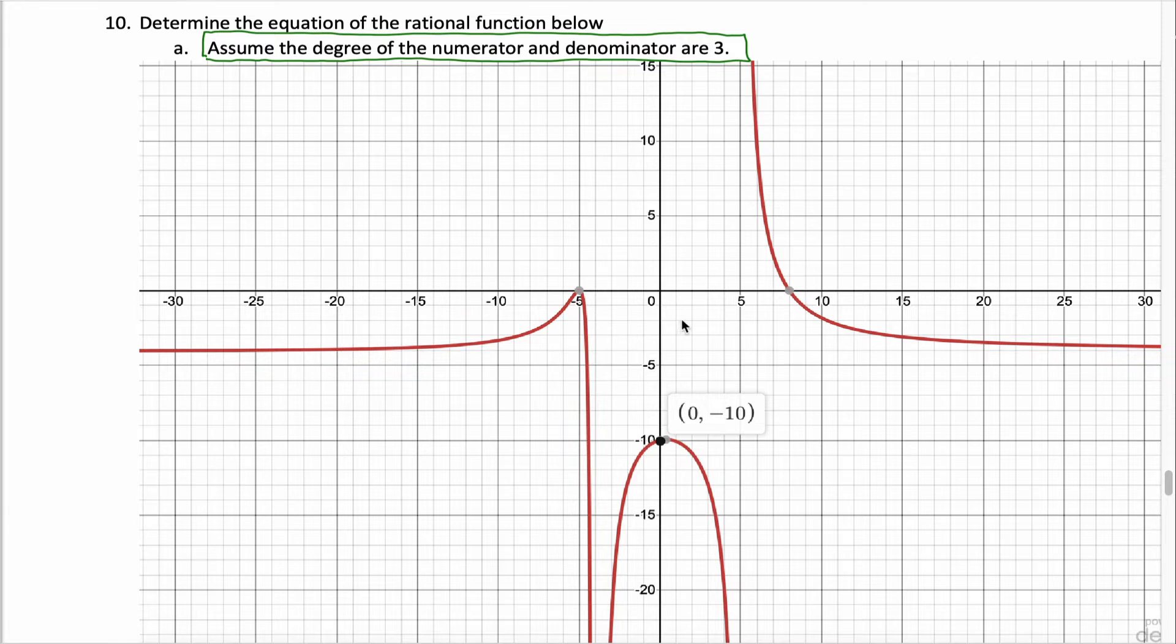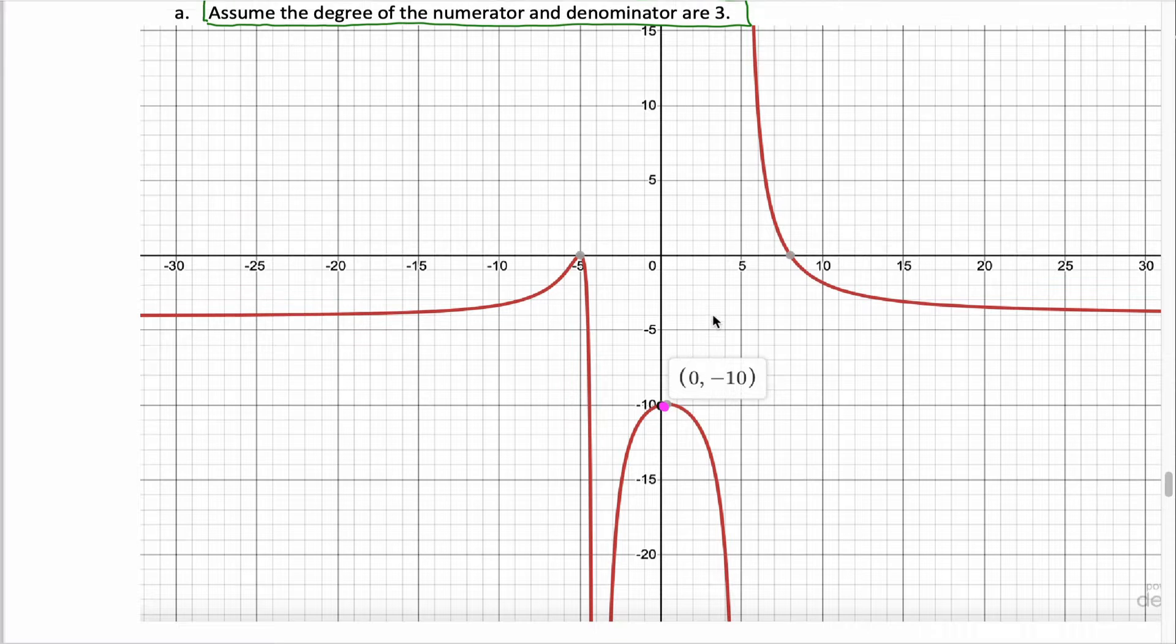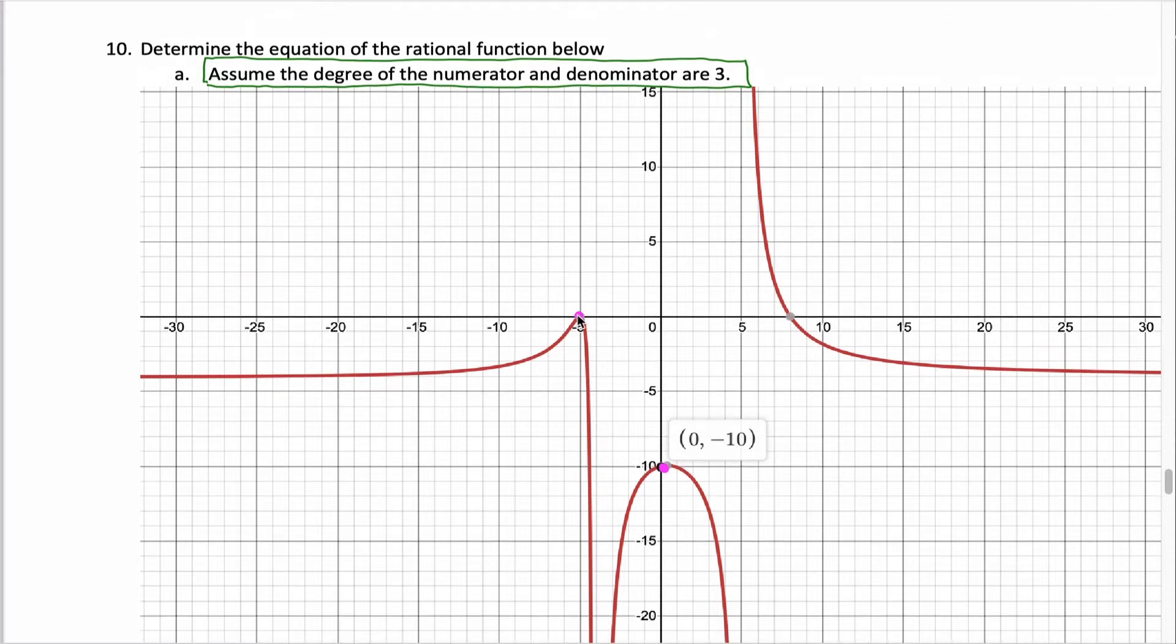Now let's look at our graph and identify all of the key characteristics. Conveniently, the y-intercept is labeled for us here at 0, negative 10. So that'll be really useful. We also have some x-intercepts labeled. It looks like this one is at negative 5, and this one appears to be at positive 8.